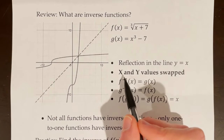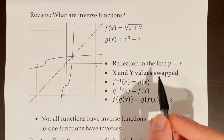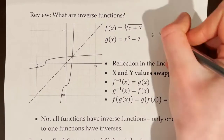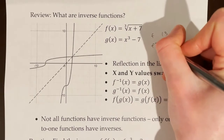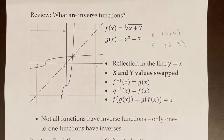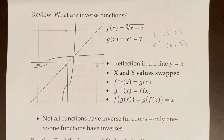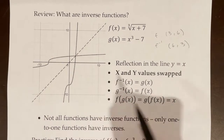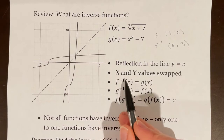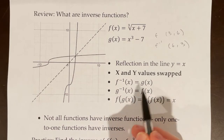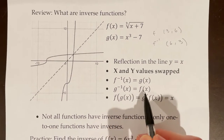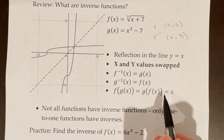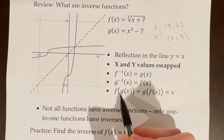On inverse functions, the x and y values are swapped. So, for example, if we had the point (3, 6) on the normal function f, then on the function f inverse, we would have the point (6, 3). This is going to be very important later. We have several ways to write that these functions are inverses: f inverse of x equals g of x, g inverse of x equals f of x, or f of g of x equals g of f of x equals x. These all indicate that f and g are inverses.